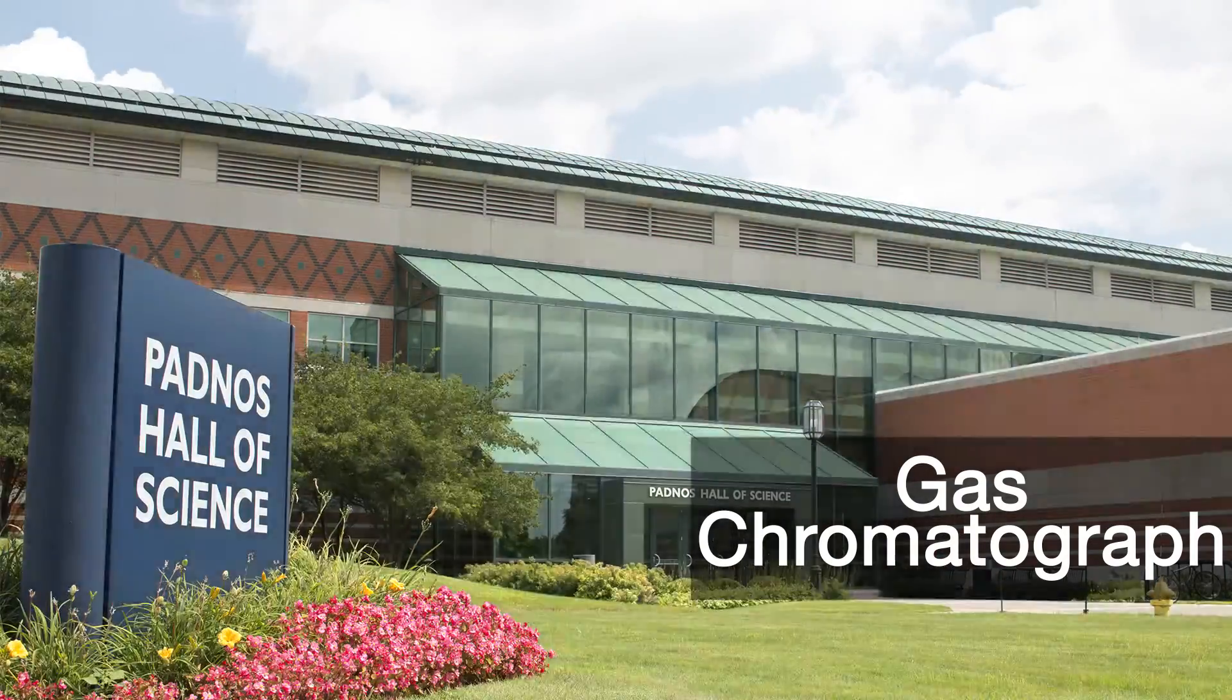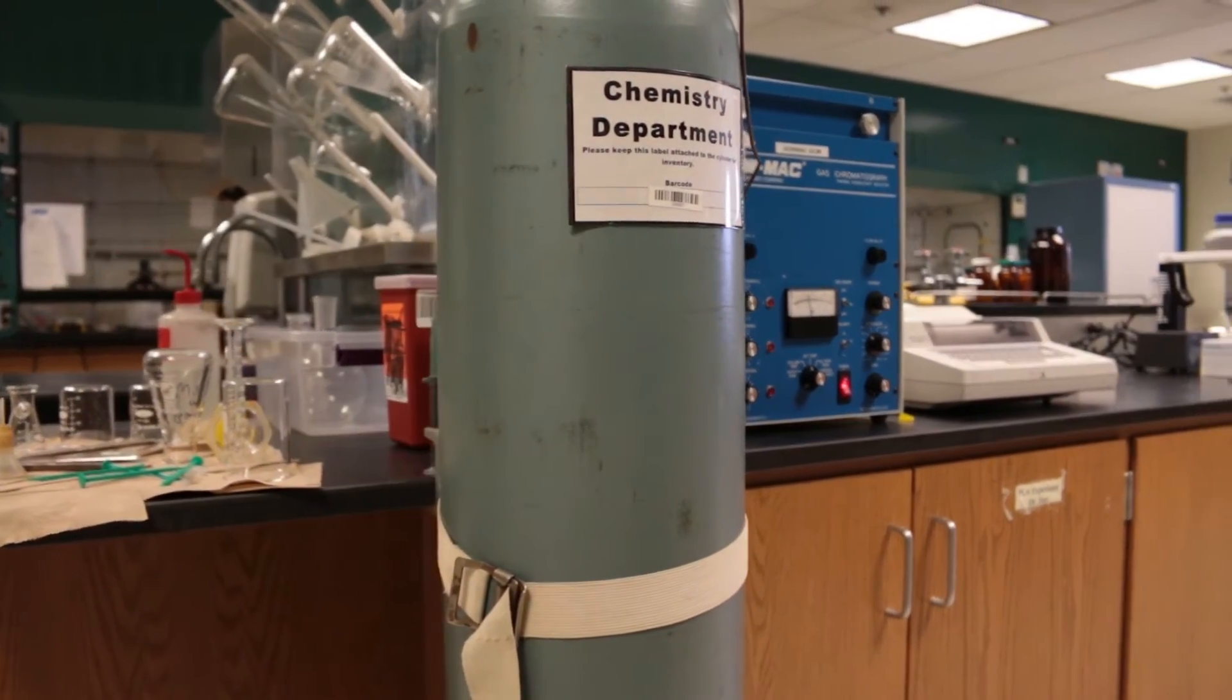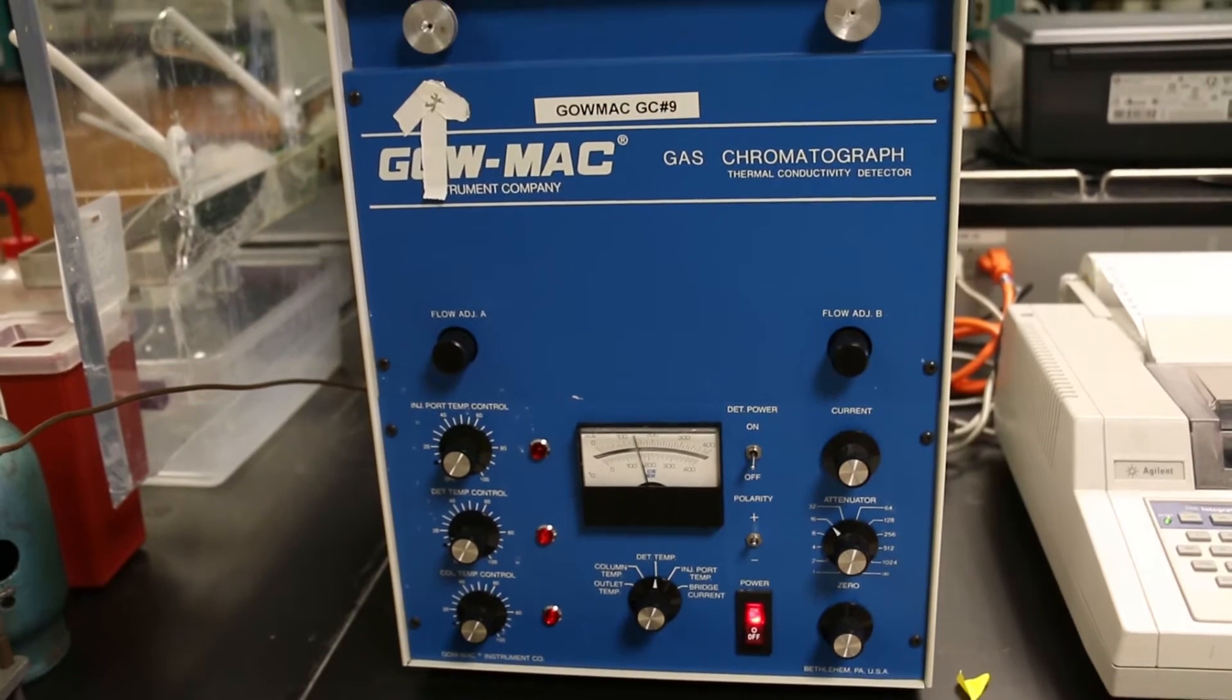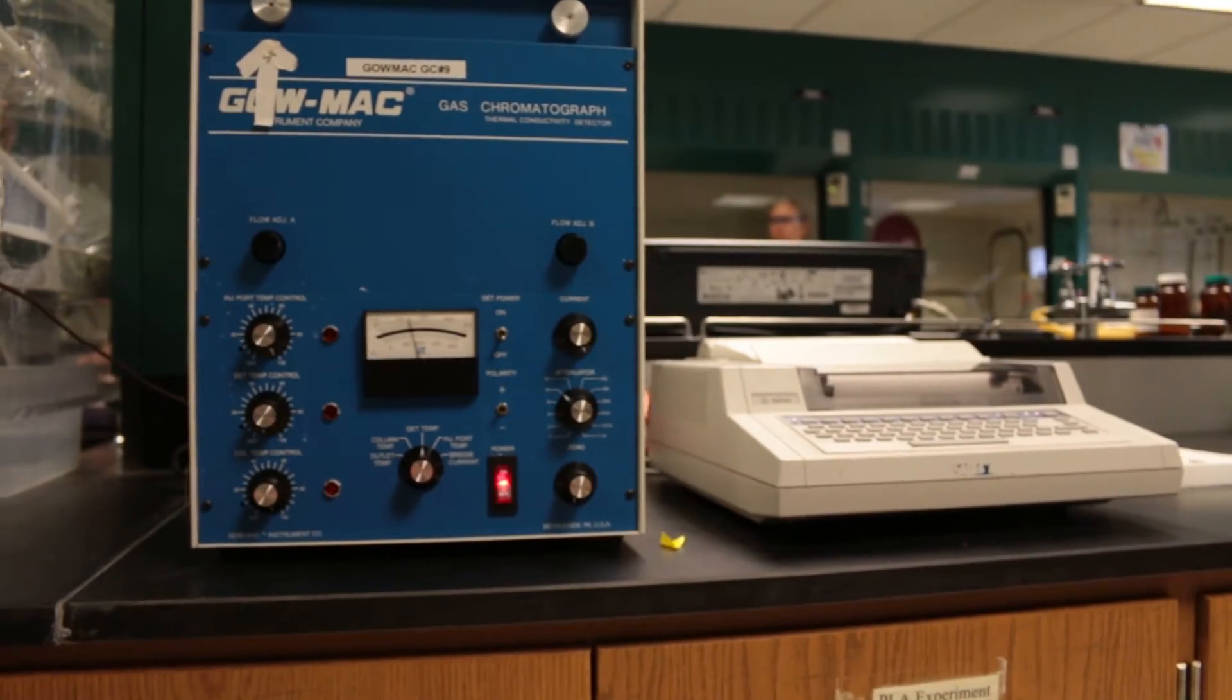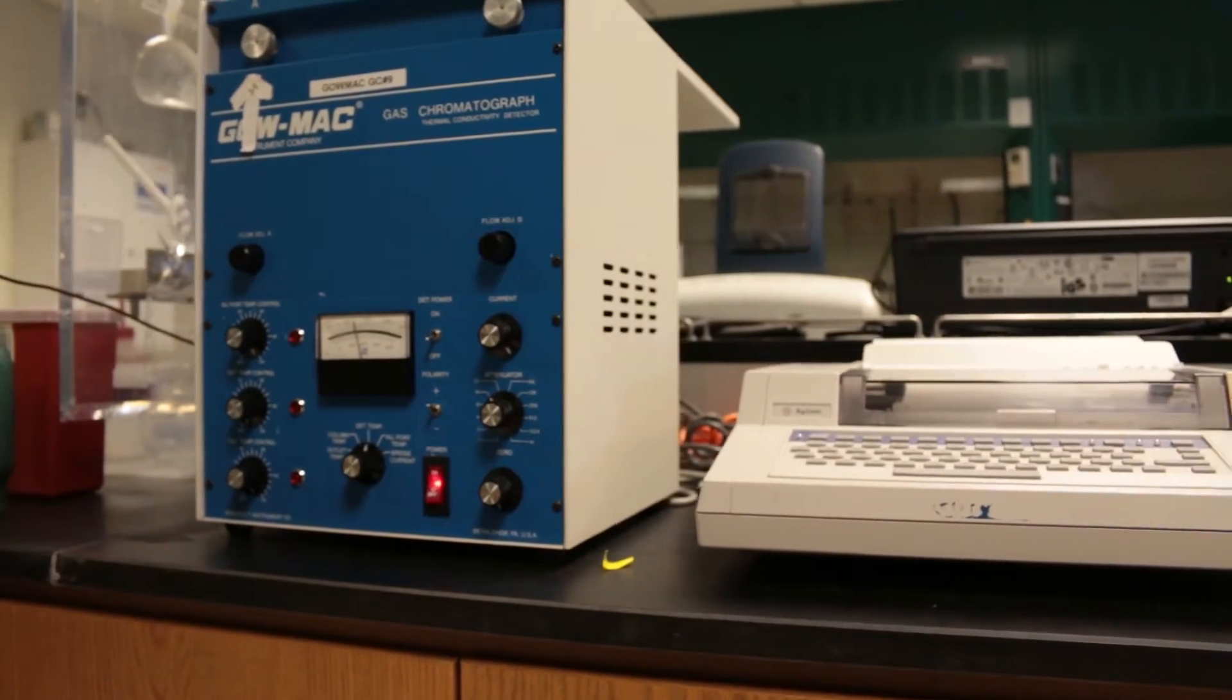The gas chromatograph is used to separate and quantify mixtures of volatile compounds in the organic laboratory. The gas chromatographs, or GCs, in the organic lab are made by the Gowmac company. Each instrument is attached to an integrator that records and quantifies output from the machines.